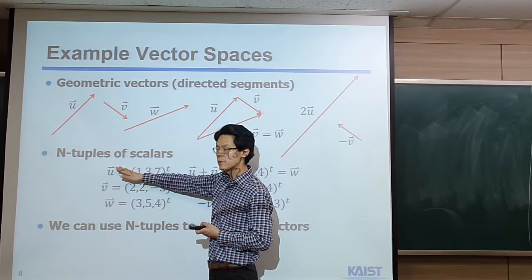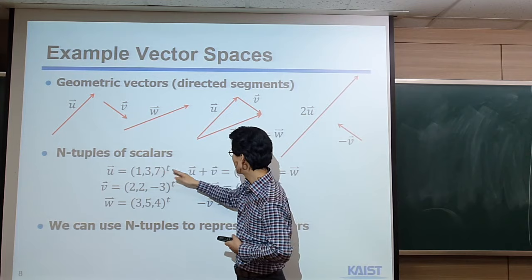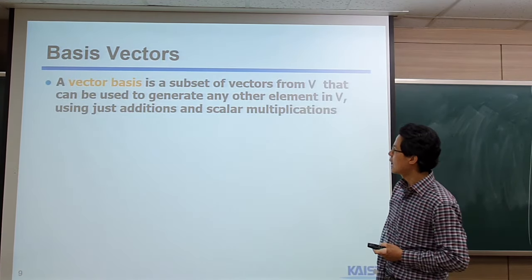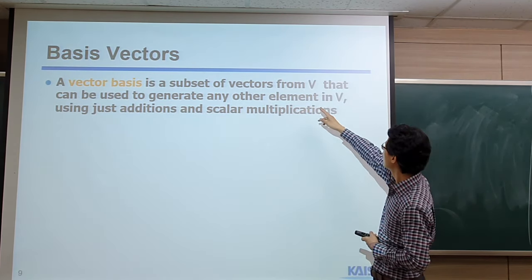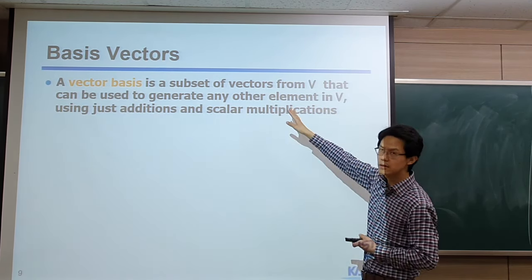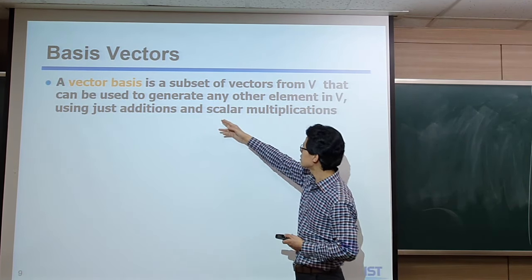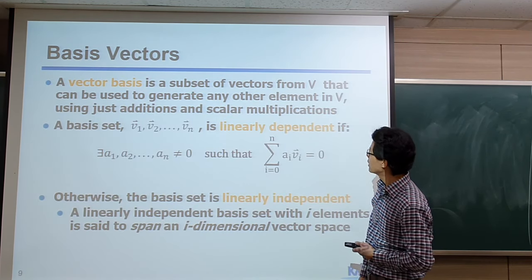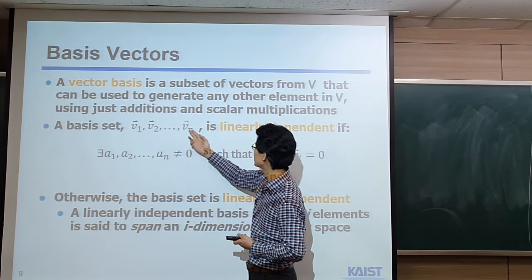Now I'd like to talk about vector basis. Vector basis is a subset of vectors that can be used to generate any other element in that vector space, by using just addition and scalar multiplication. For example, if some people say that this is a basis set of vectors from V1 to Vn, we say that this basic vector set is actually linearly dependent if there are certain constants such that the weighted sum of those vectors turns out to be zero.